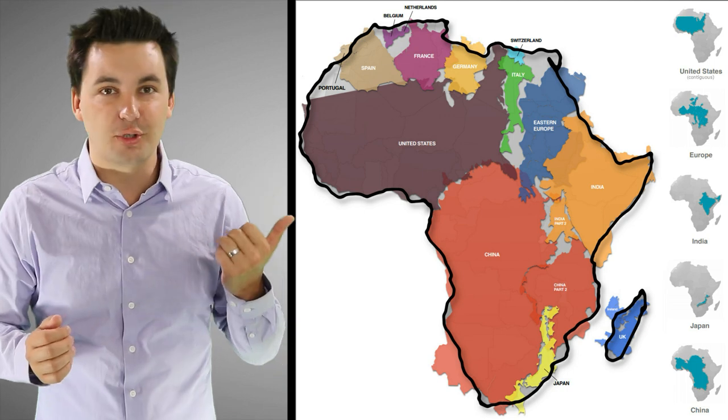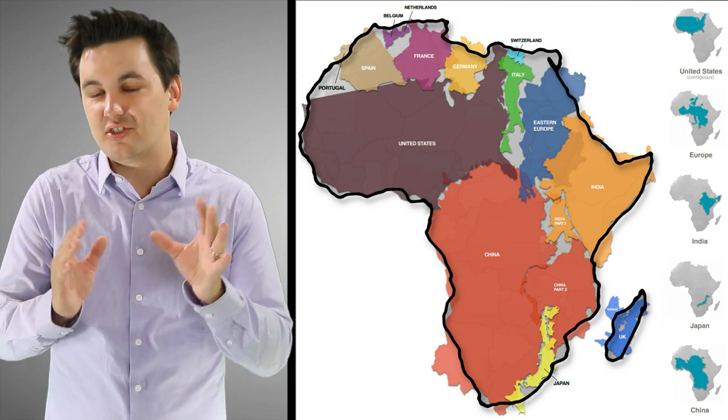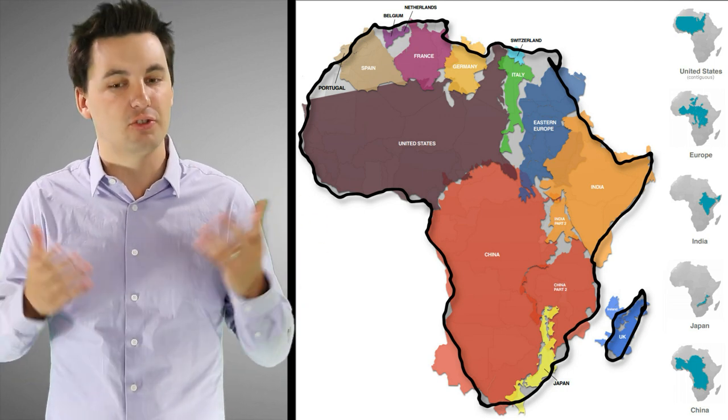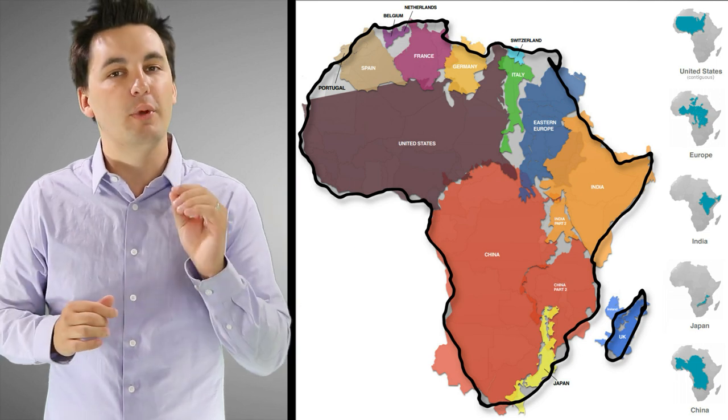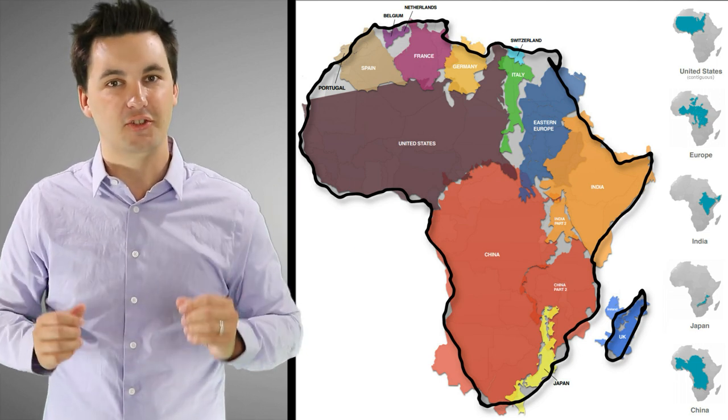Africa is way larger than Greenland. Look at all the countries you can actually fit inside of Africa. Greenland is tiny, but distortion here distorts the truth. And so we have to always be cognizant of that.